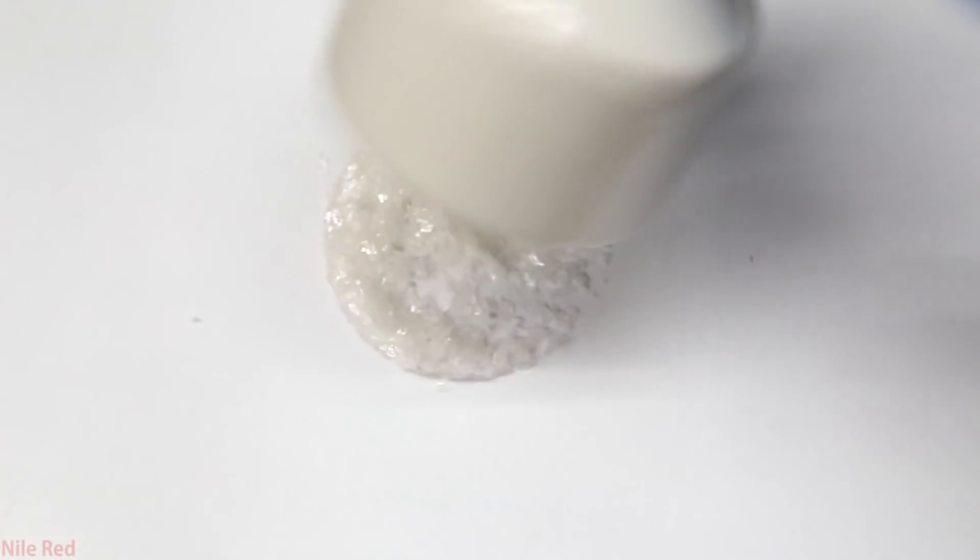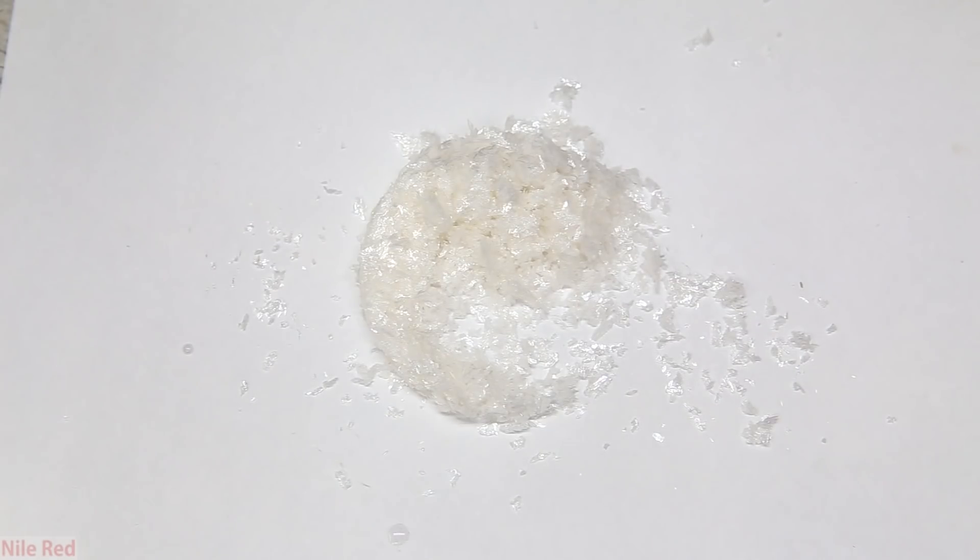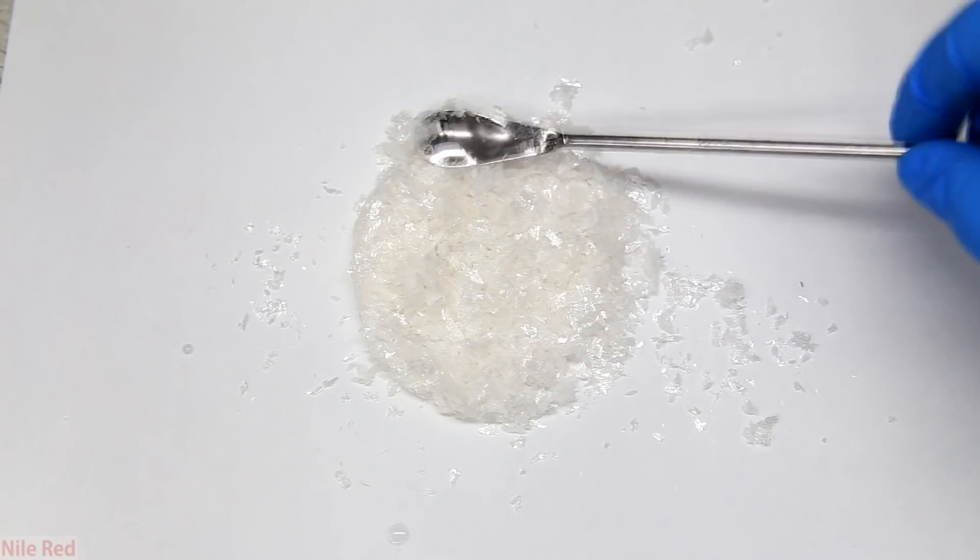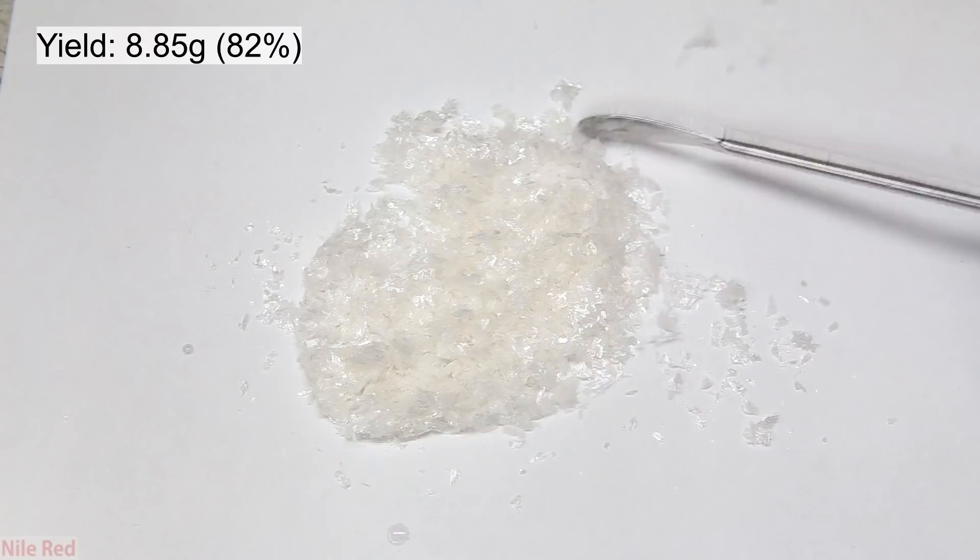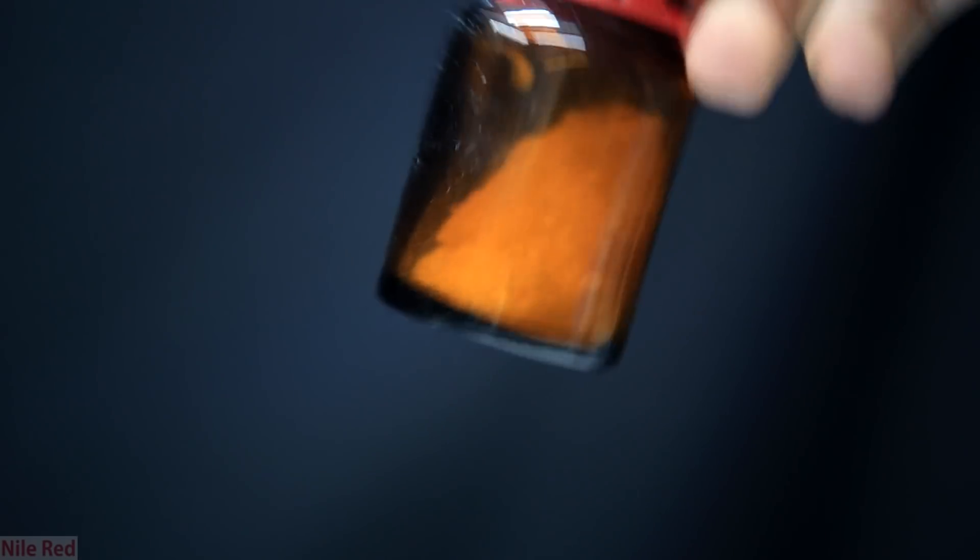The contents of the Buchner funnel are then dumped onto a white piece of paper. You can see here that we have some fairly nice slightly off-white crystals of vanillin oxime. The final yield of vanillin oxime is 8.85 grams which represents a percent yield of about 82 percent. The vanillin crystals are then transferred to a small bottle for storage.